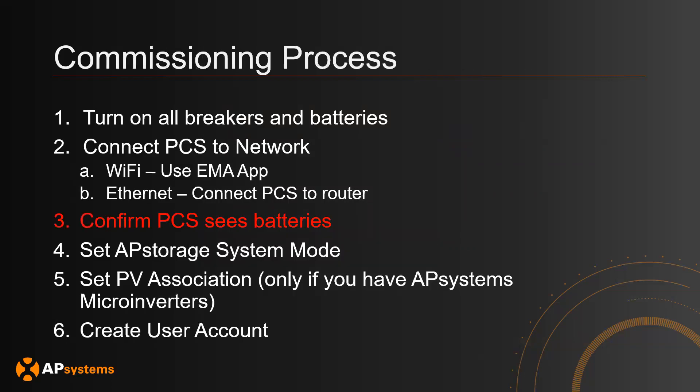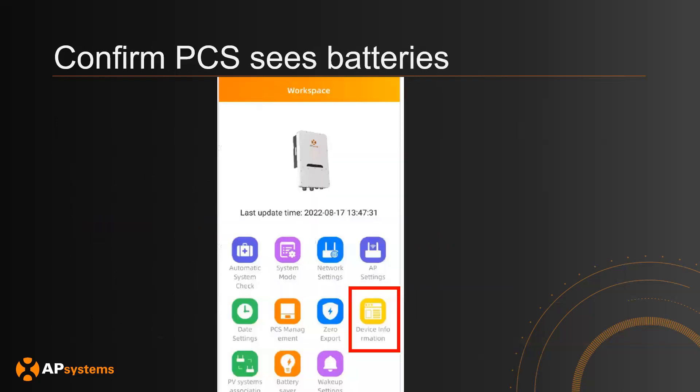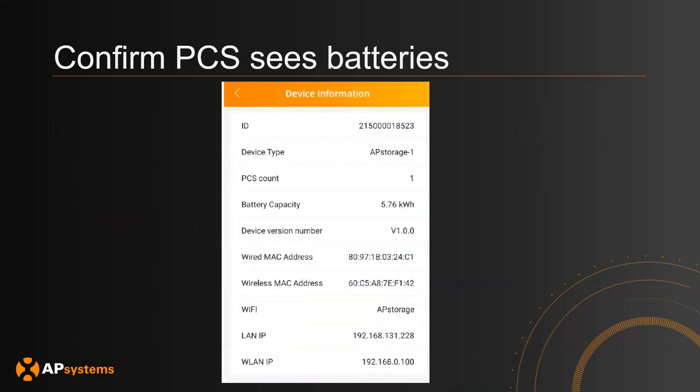Now that you've successfully connected the PCS to the Wi-Fi network, confirm that the PCS sees the battery. Go back to the Workspace page, then Device Information. Look at the row titled Battery Capacity — if you see a non-zero number, you have successfully connected the battery to the PCS. In this example, you see 5.76 kilowatt hours. If you do not see the battery, double-check the DC battery cables and whether the battery CAN or RS-485 cable is wired correctly.